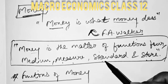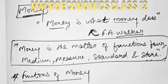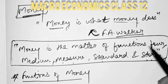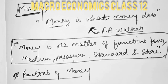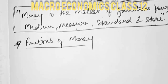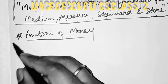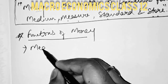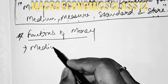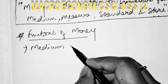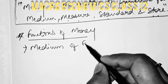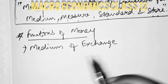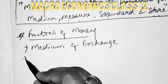Your complete definition is in front of you. Money is a matter of 4 functions. The first function is that it acts as a medium of exchange. Some economists consider this the primary function of money.